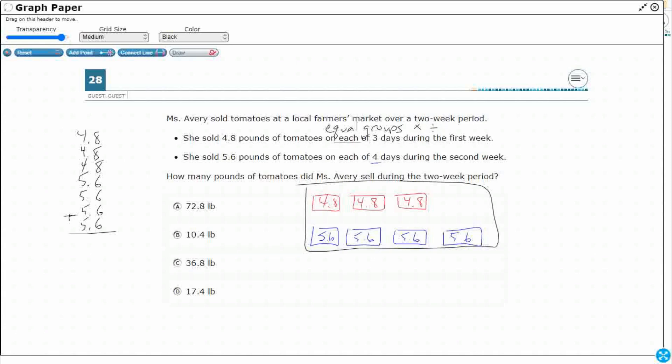In this case, each of these groups, there's three groups, and each of those groups are 4.8. So I'm just going to do 3 times 4.8, which is what this is right here. That's what this is. Three groups of 4.8, or 4.8 plus 4.8 plus 4.8, repeated addition. And then I need to add together the 4 pounds of the 5.6, because it's also each. 4 times 5.6, which is what this is down here.